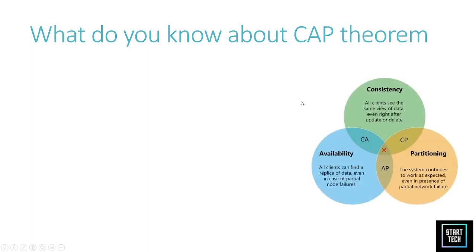Moving on — what do you understand by the CAP theorem? On a high level, the CAP theorem consists of three guarantees: Consistency, Availability, and Partitioning. Consistency means that even if you do some CRUD operations, updates, or deletes, the data will be available consistently for all clients. Availability means that even if there is a node failure, the data should still be available.